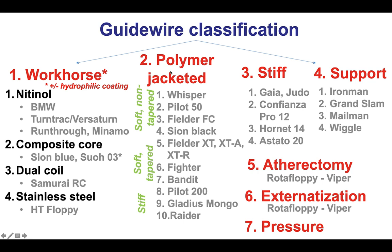The second key category are the polymer jacketed wires. Those can be soft non-taper, such as the Whisper, Pilot 50, Fielder FC, and Sion Black — often used in cases of tortuosity. There are also soft tapered polymer jacketed wires such as the Fielder XT, Fighter, and Bandit, used as the first wire for CTO crossing. Then the stiff polymer jackets such as the Pilot 200, Gladius, Gladius Mongo, and Raider, used mainly in CTO interventions. The third category are stiff tip guide wires for penetrating hard calcified caps. The fourth are support wires for extra support during delivery. The fifth are atherectomy wires — the Rota Floppy, Rota Extra Support, and the Viper, either standard or flex tip for orbital atherectomy. The sixth are externalization wires for retrograde CTO PCI. And finally, the pressure wires, used for physiologic assessment.